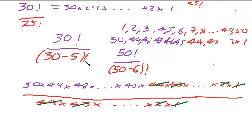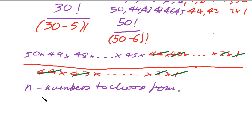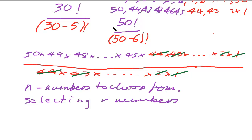Let's get a general letter formula for this. We've got n numbers to choose from, and we are selecting r numbers. In the first case, n is 30 and r is 5; in the second case, n is 50 and r is 6. The formula is n factorial over n minus r factorial, and that gives the permutation — remember this is a permutation because order is mattering here — of r numbers from n.